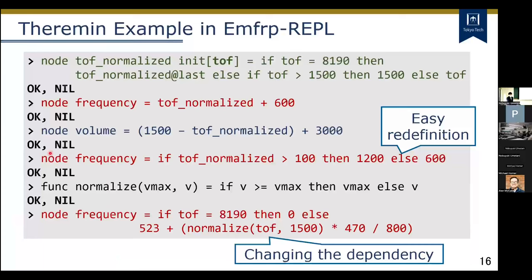Here is an example in MFRP-Level. In the first line, the frequency node is defined. No special commands are required before or after the definition. In the second line, frequency is redefined, and the dependency changes — MFRP-Level automatically re-sorts the nodes. If there is a cyclic reference, MFRP-Level reports an error and restores the state before the modification. The input node TOS and output nodes frequency and volume are predefined by the interpreter. For easy node definition, MFRP-Level provides simple APIs.